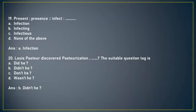Next question: Louis Pasteur discovered pasteurization. The suitable question tag is (A) did he, (B) didn't he, (C) don't he, or (D) wasn't he. The correct answer is option B, didn't he. Louis Pasteur discovered pasteurization, didn't he? Because the sentence is positive, you use a negative question tag.